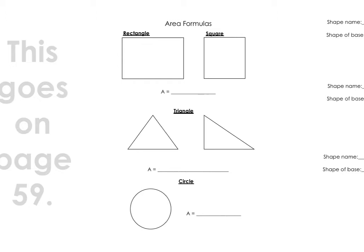Starting with a rectangle, the two dimensions we look at when finding the area are length and width, and it doesn't matter where you put length and where you put width. Same thing with a square — we have length and width. The only thing special about a square is that the length equals the width. The area of a rectangle and a square is length times width, so we just multiply the two dimensions.